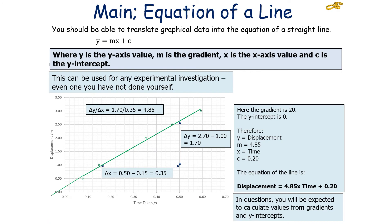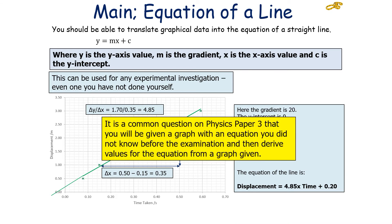This can be used for any experimental investigation, even one you haven't done yourself. If given this data in an examination question, you can recognise that the y-value is displacement and the x-value is time. You can see the y-intercept is 0.2 and work out the gradient is 4.85. So the equation of the line is: displacement = 4.85 × time + 0.2. It's a common question on Physics Paper 3 — you'll be given a graph with an equation you did not know before the examination and be asked to derive values for that equation from the graph.